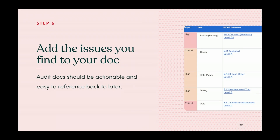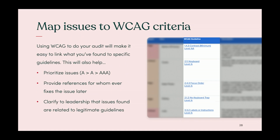Create documents, create training, have conversations, and make sure your system supports accessibility at the documentation level. Add issues to your doc and map all of those issues to WCAG criteria — this helps prioritize issues, provides references for whoever fixes it later, and shows leadership that you're referencing globally recognized and often legally referenced guidelines.